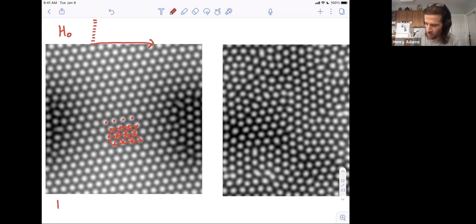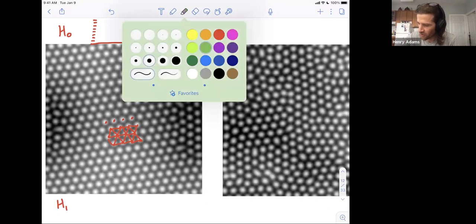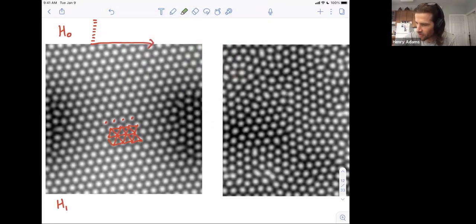And what does the one-dimensional barcode look like? Well, if you use the Vietoris-Rips complex, then whenever the three edges appear, if the triangle gets filled in, I'll make my triangles green. As soon as the three edges appear, the triangle appears. So in the Vietoris-Rips complex, you would get no H1 bars at all because whenever the edges form to give you a triangle, that triangle would immediately get filled in.